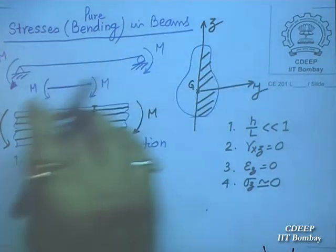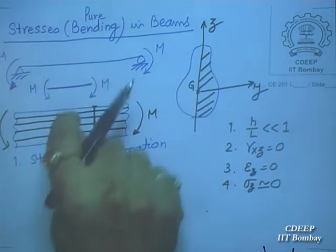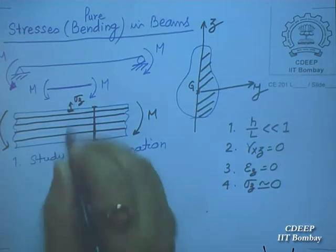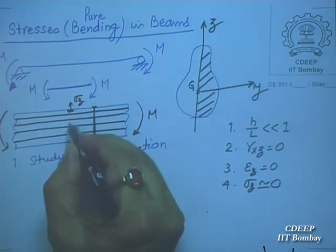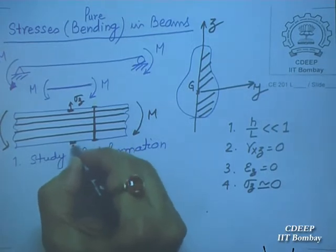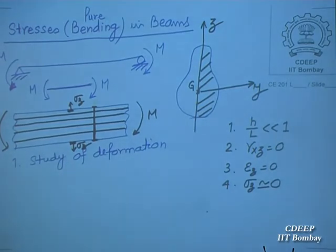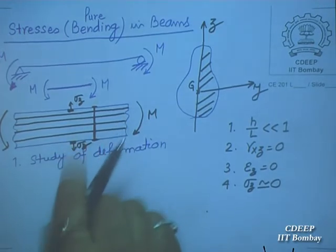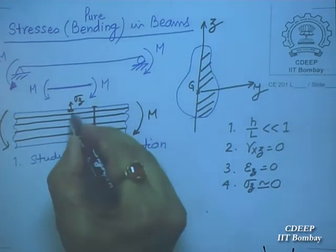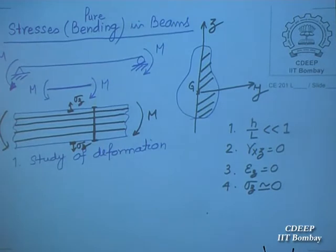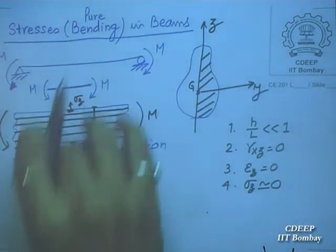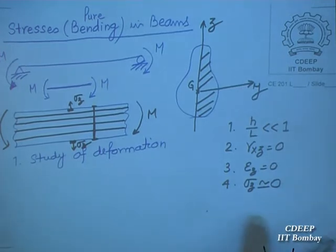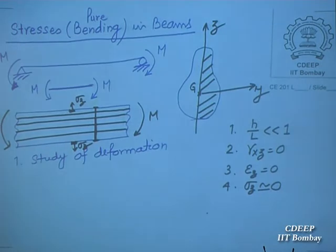Why is sigma_z approximately zero? The top surface is free — no load — so sigma_z is zero there. The bottom surface is also free, so sigma_z is zero there as well. Because the beam is slender, the depth is very small, and sigma_z changes only from zero to zero. It is a very, very small quantity compared to other stresses, and therefore it will be neglected. These four assumptions must be remembered.